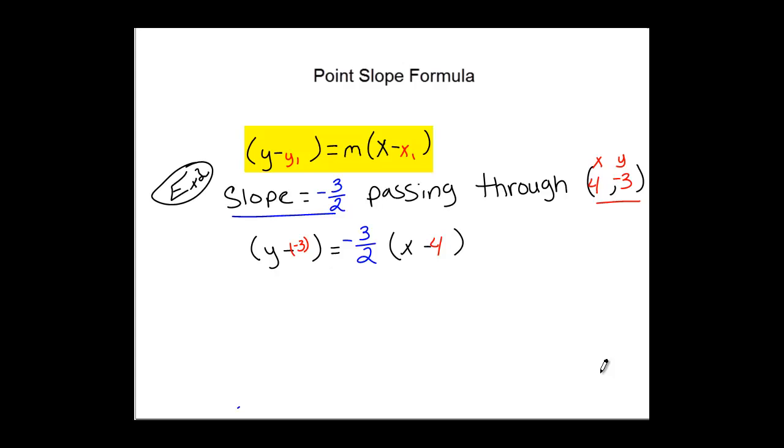We're going to say y plus 3 is equal to negative 3 over 2x because we're going to distribute. Now I'm going to take negative 3 over 2 times 4 over 1, which is negative. 2 negatives become a positive. 3 times 4 is 12, 2 times 1 is 2. Reduce that, it becomes a positive 6. So now we have plus 6.